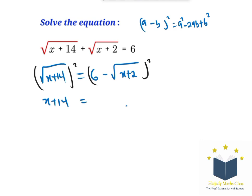On the right-hand side, I'm going to have 6² minus 2 times 6 times root x plus 2, plus (root x plus 2)².